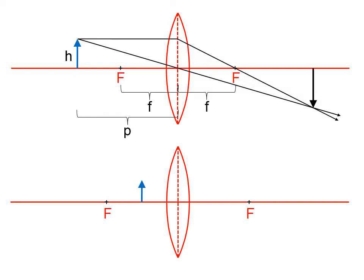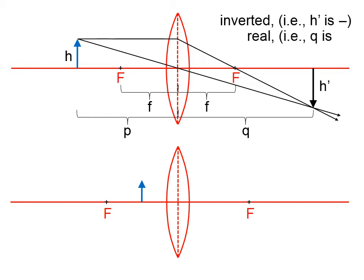That means that our image would be right over there. This would be a real image because these light rays really do converge, and it's going to be an inverted image. All real images are inverted. H prime will be negative here. However, q will be positive — q is positive for real images. H prime is negative so it's inverted. It's a real image. Q is positive.